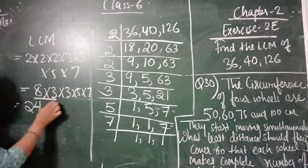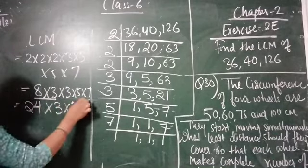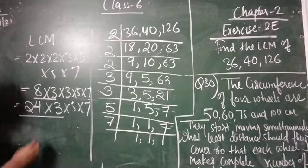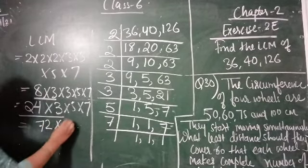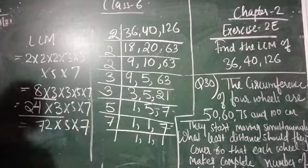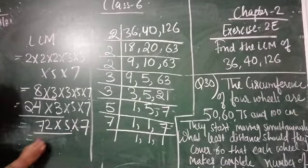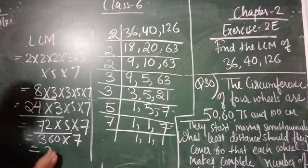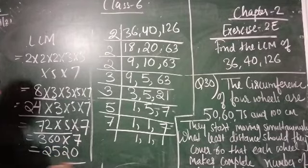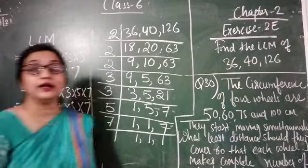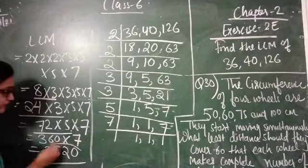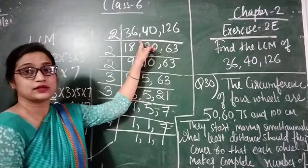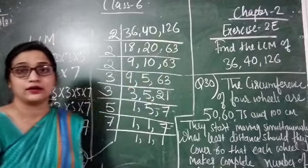Continuing the multiplication: 8 × 3 = 24, then × 3, × 5, × 7. 24 × 3 = 72, then × 5, × 7. 72 × 5 = 360, then × 7. 360 × 7 = 2,520. So 2,520 is the LCM of the three numbers 36, 40 and 126.